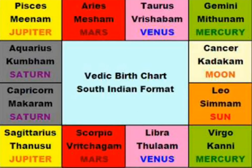Each house consists of 30 degrees, totaling 360 degrees. To predict a horoscope, we make use of this combination.